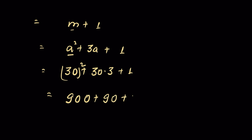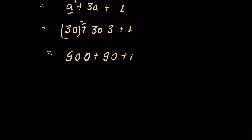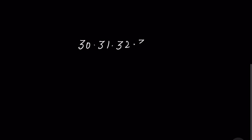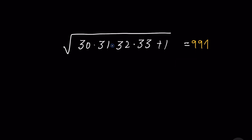Since a equals 30, we get 30 squared plus 30 times 3 plus 1, which equals 900 plus 90 plus 1, and that is equal to 991 — no calculator required. Let's check it in the calculator: 30 times 31 times 32 times 33 plus 1 under square root — the answer is 991. How did you solve it? Let me know in the comment section. Thanks for watching.